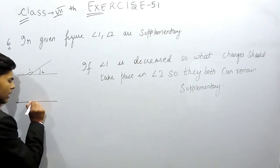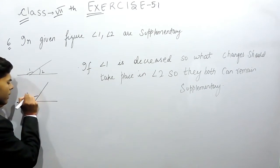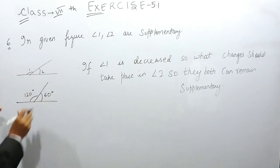Suppose this is the straight line. Suppose this angle is 120 degrees and this is 60 degrees. You can see that these two are supplementary angles because they are making the sum of 180 degrees.